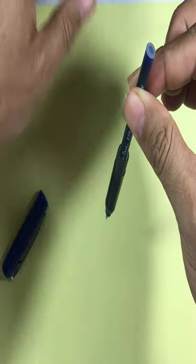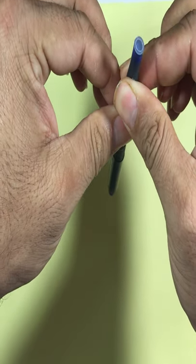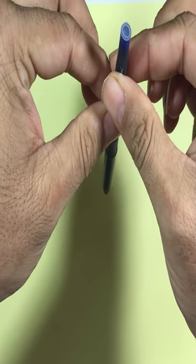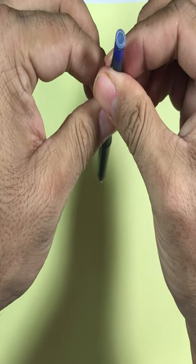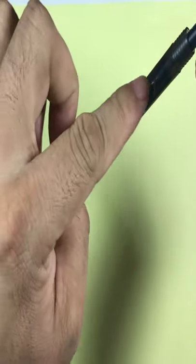Squeeze the cartridge like this and you can see the ink going down. Okay, we have the ink out of the nib.